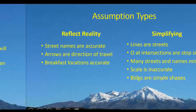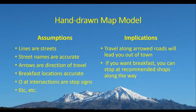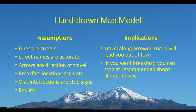So what are the assumptions of this hand-drawn model? If the lines are streets, if the street names accurately reflect the names in the real world, if the arrows are the direction of travel, if the breakfast locations are marked, if the circles at intersections are stop signs — then the implications follow. If you travel along the arrowed roads, it will lead you out of town back to Indianapolis. And if you want breakfast, you can stop at the recommended shops along the way. That's how a map conforms to a deductive exercise: a set of assumptions, a set of implications.